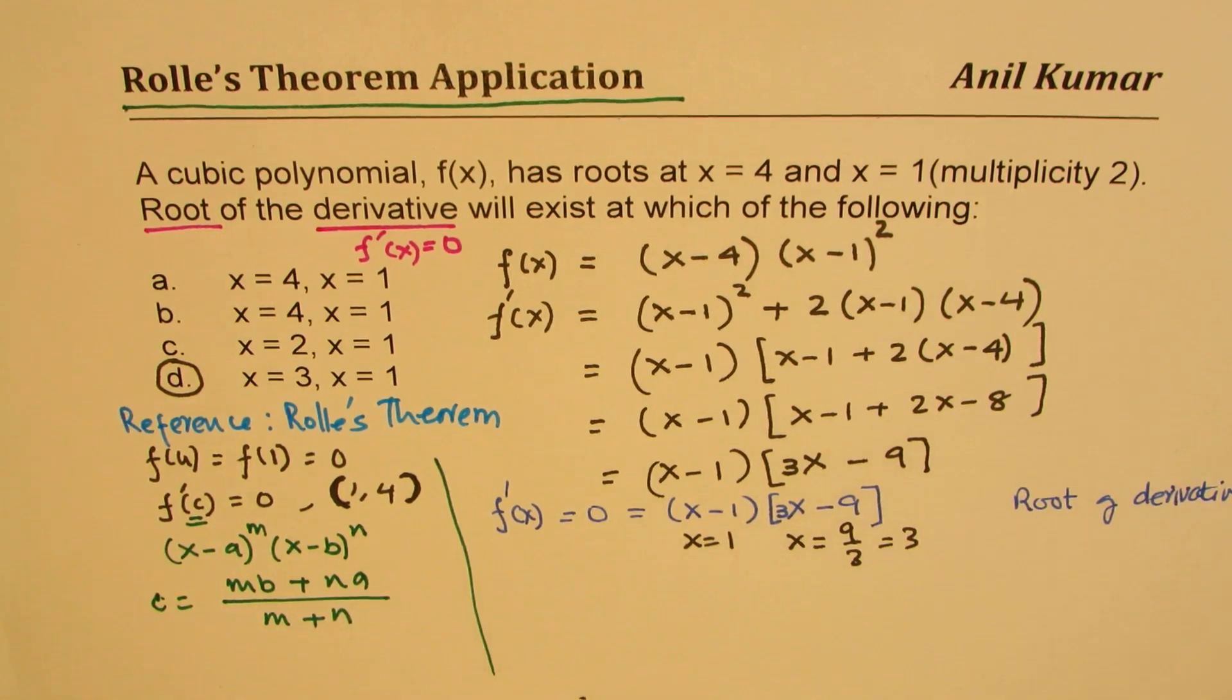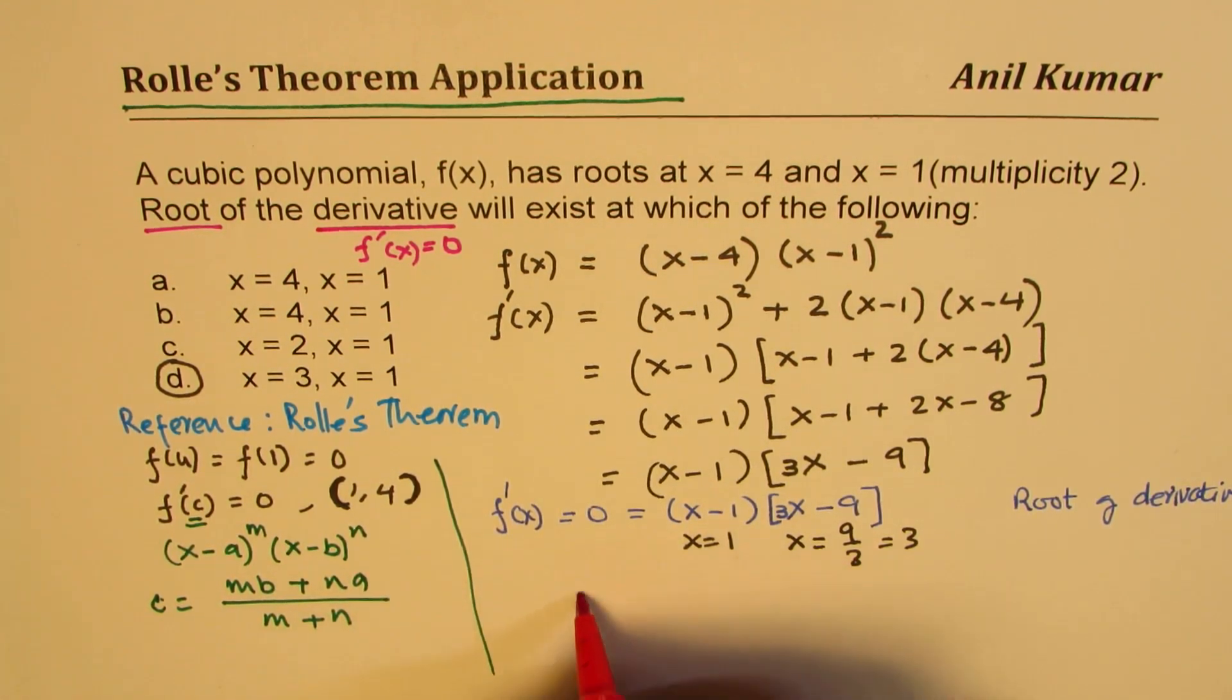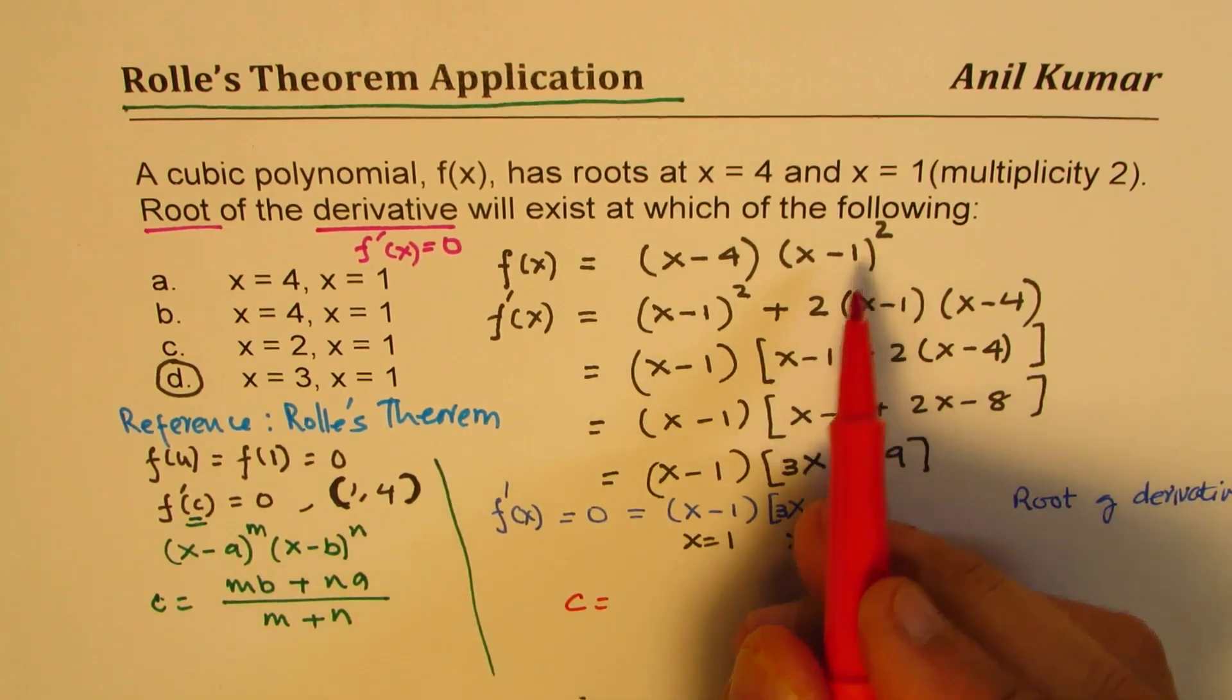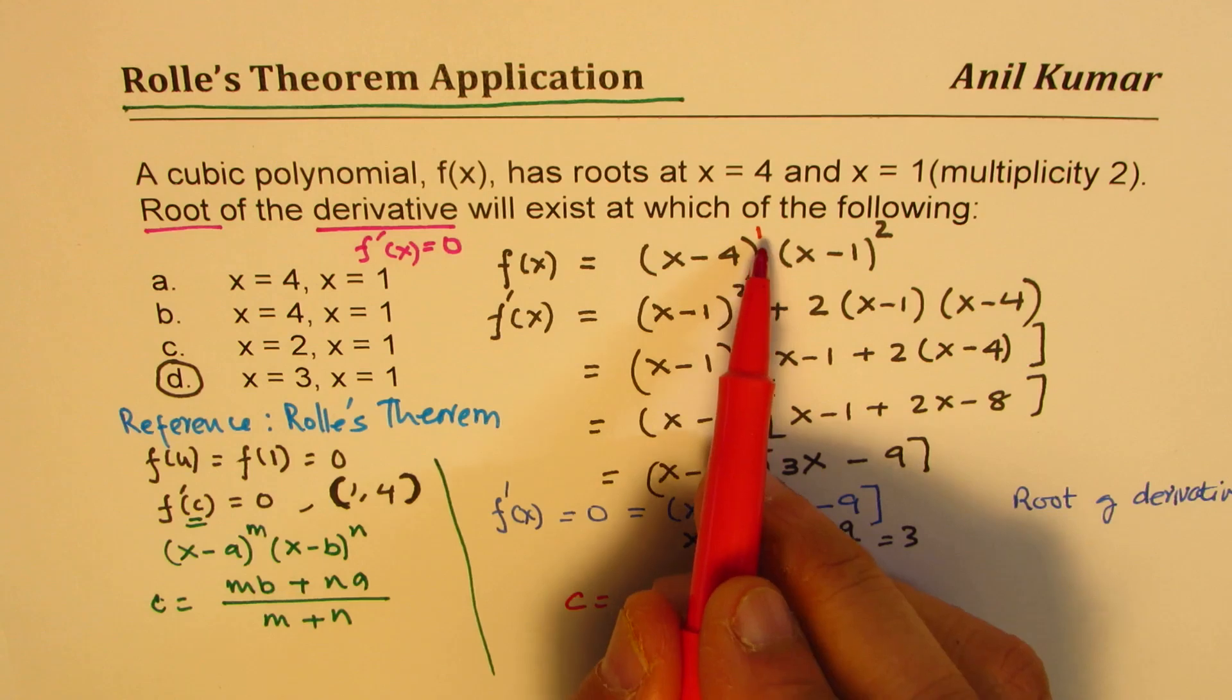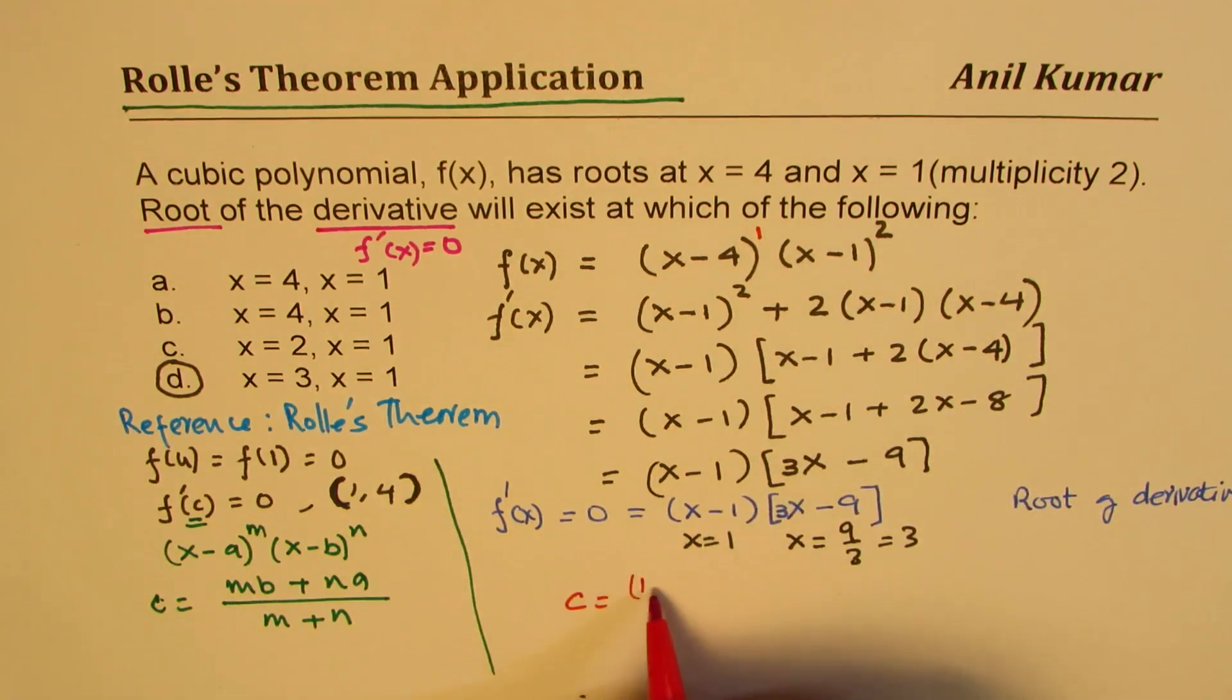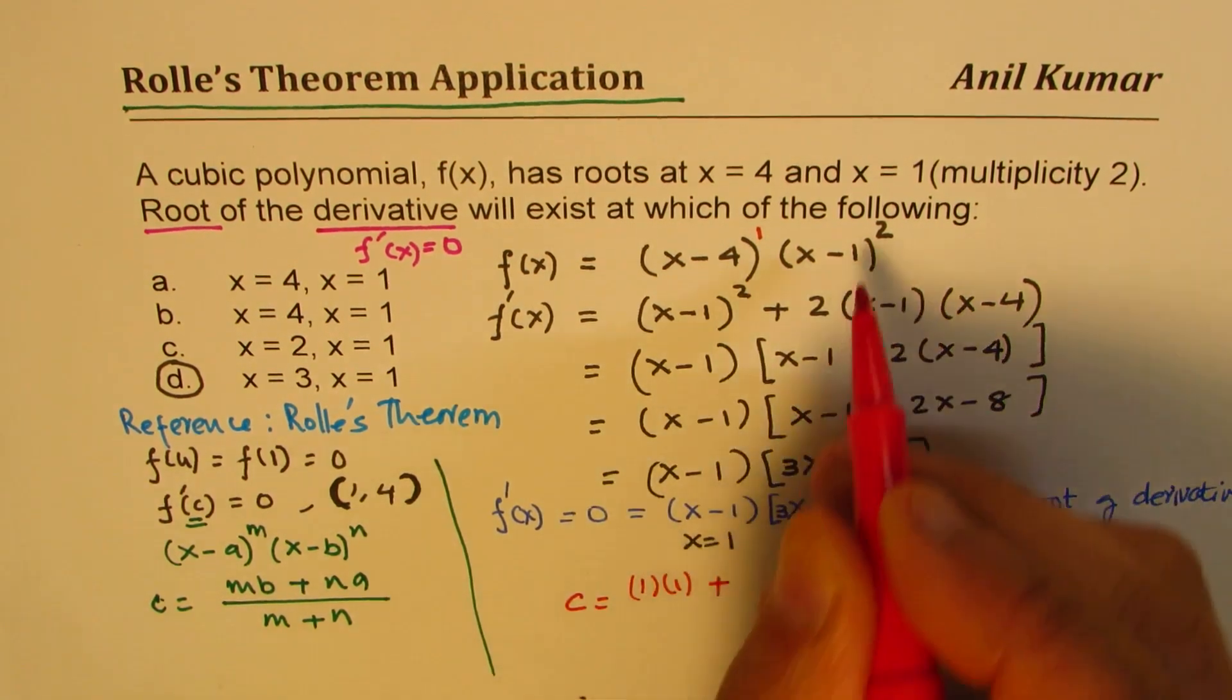So I'll provide a link for this. If you know this, then we could have found the point c very easily here. So what we're trying to say here is that this is 1, right? So the answer is 1 times 1 plus 2 times 4, right?